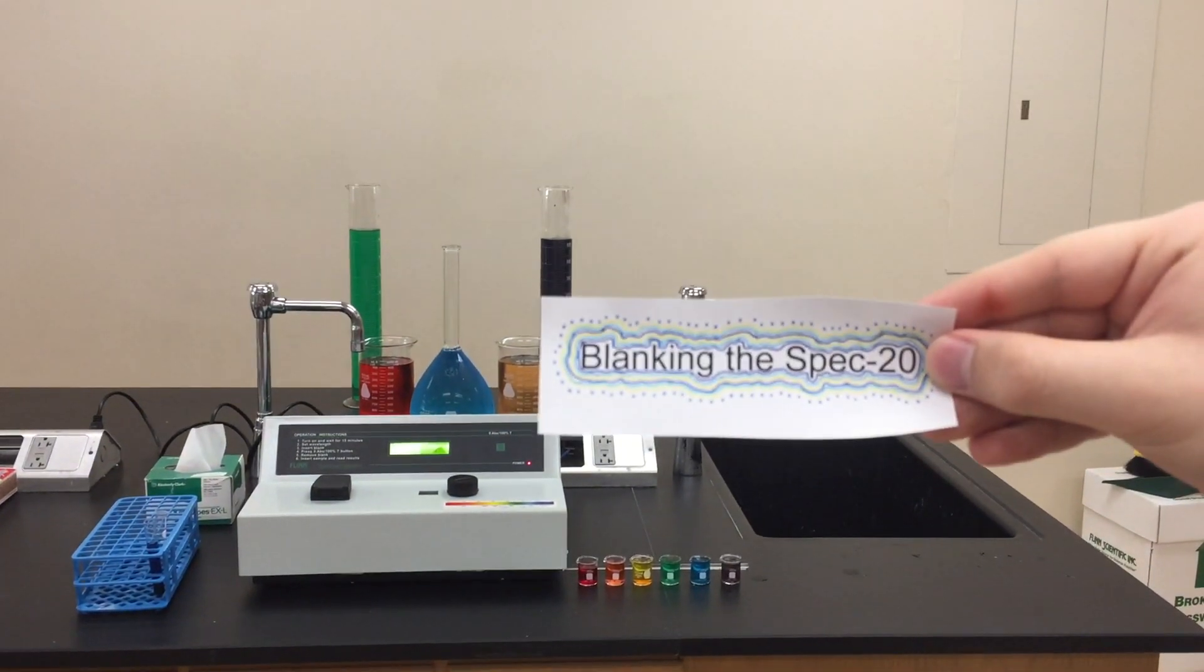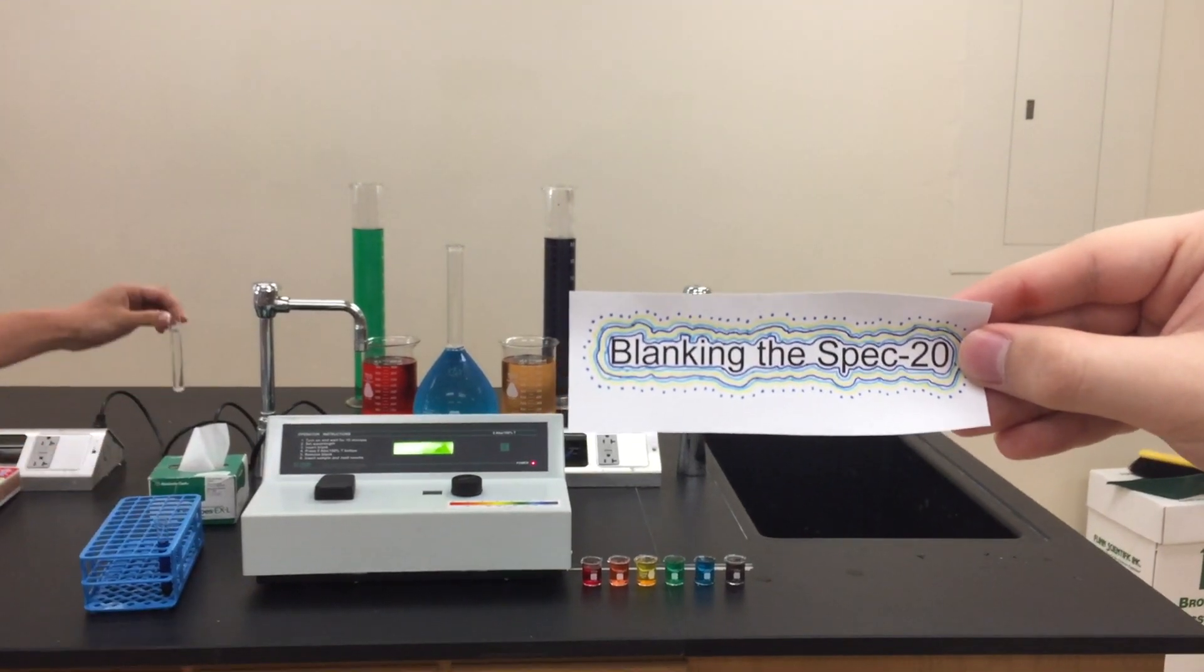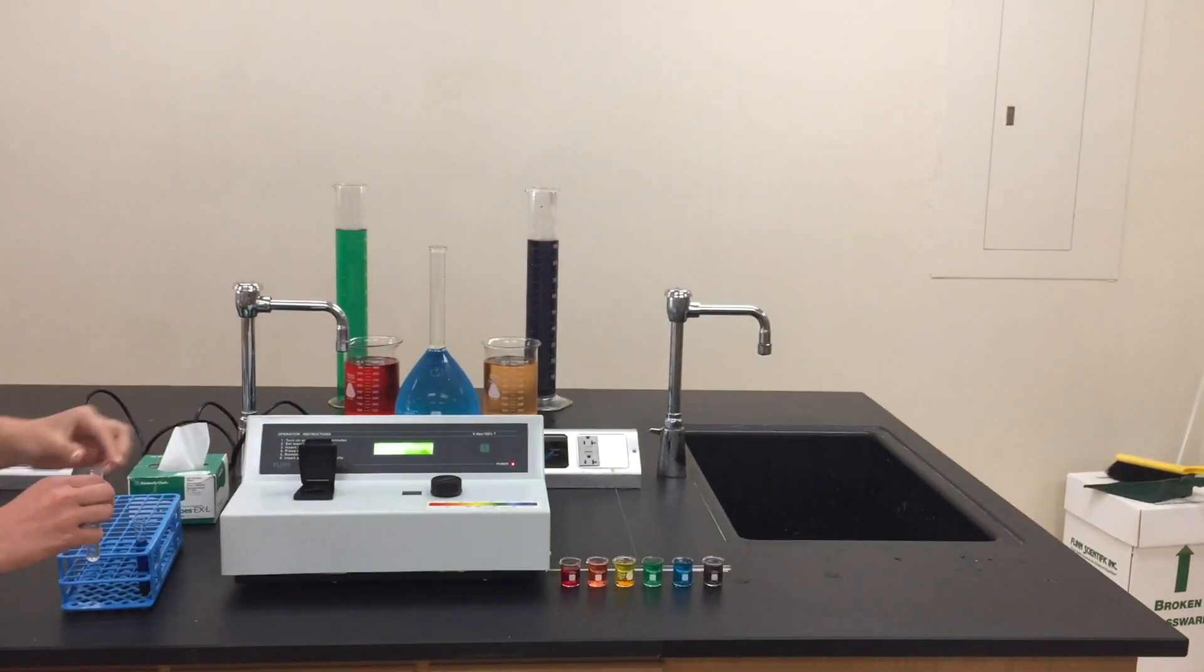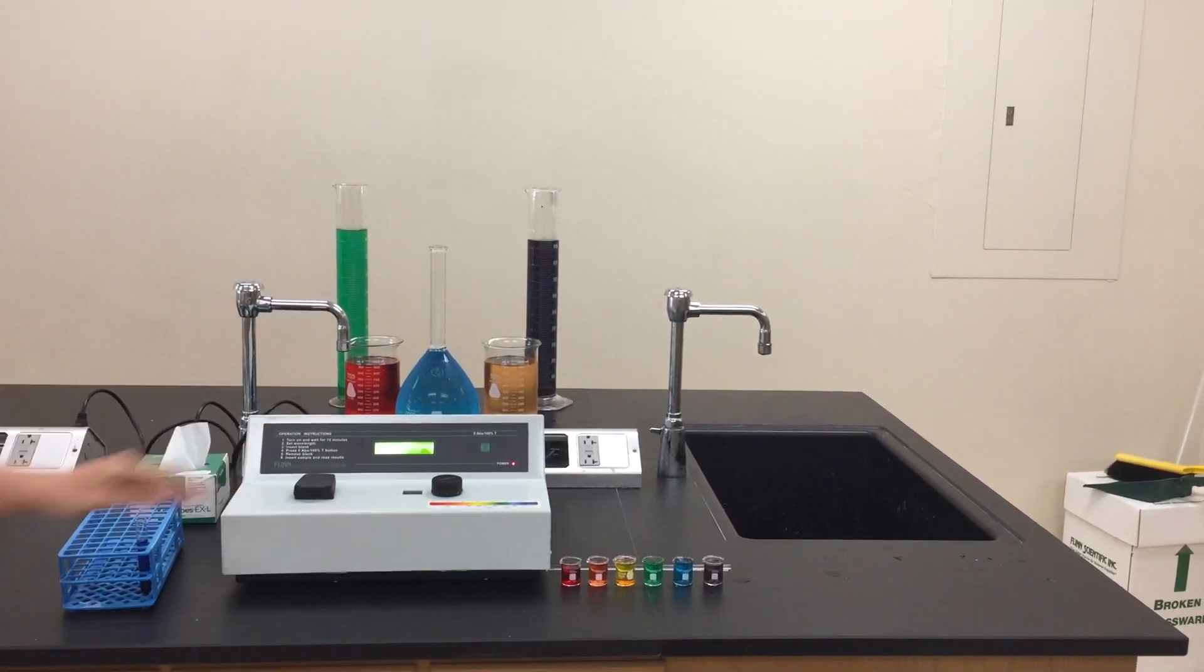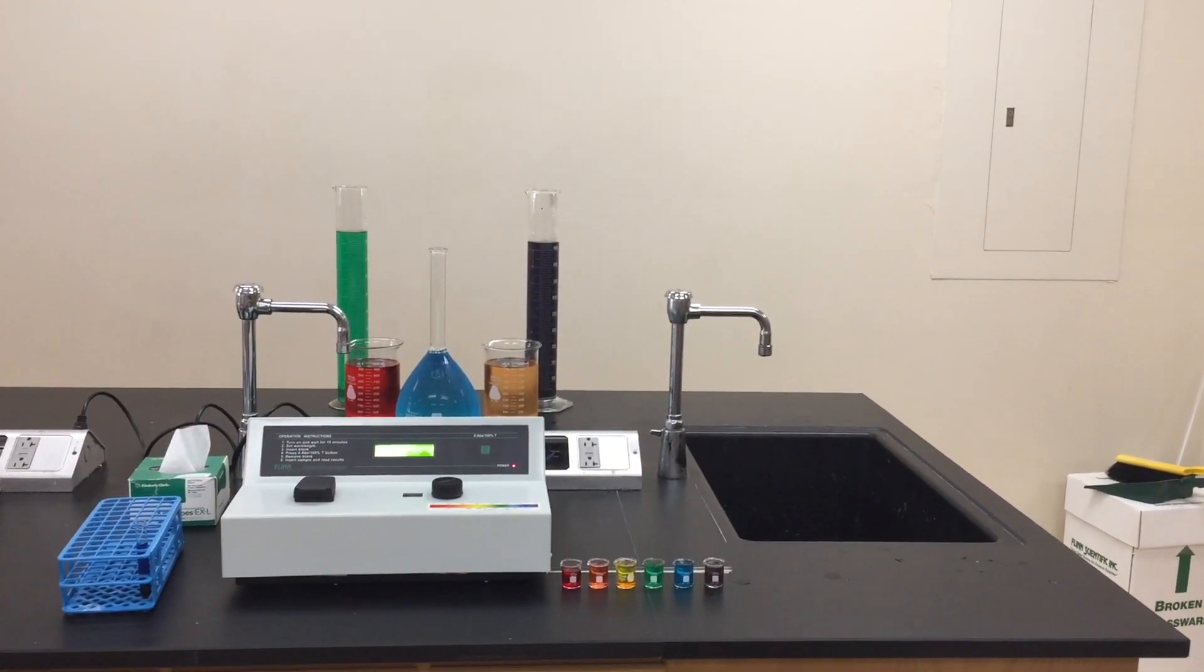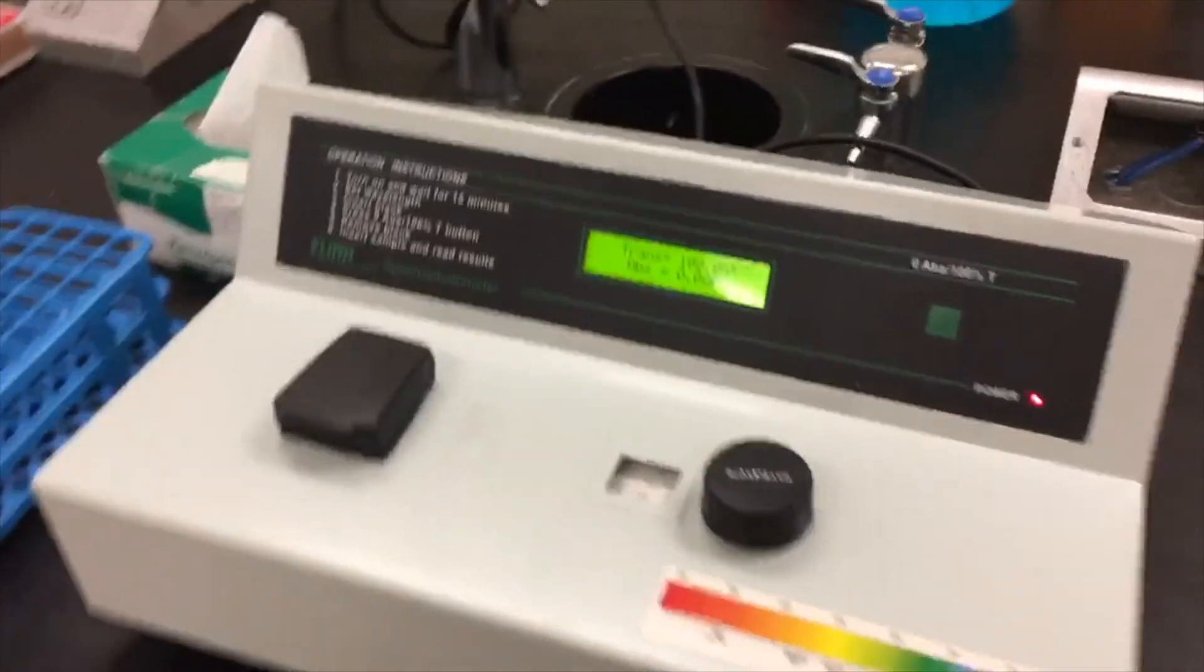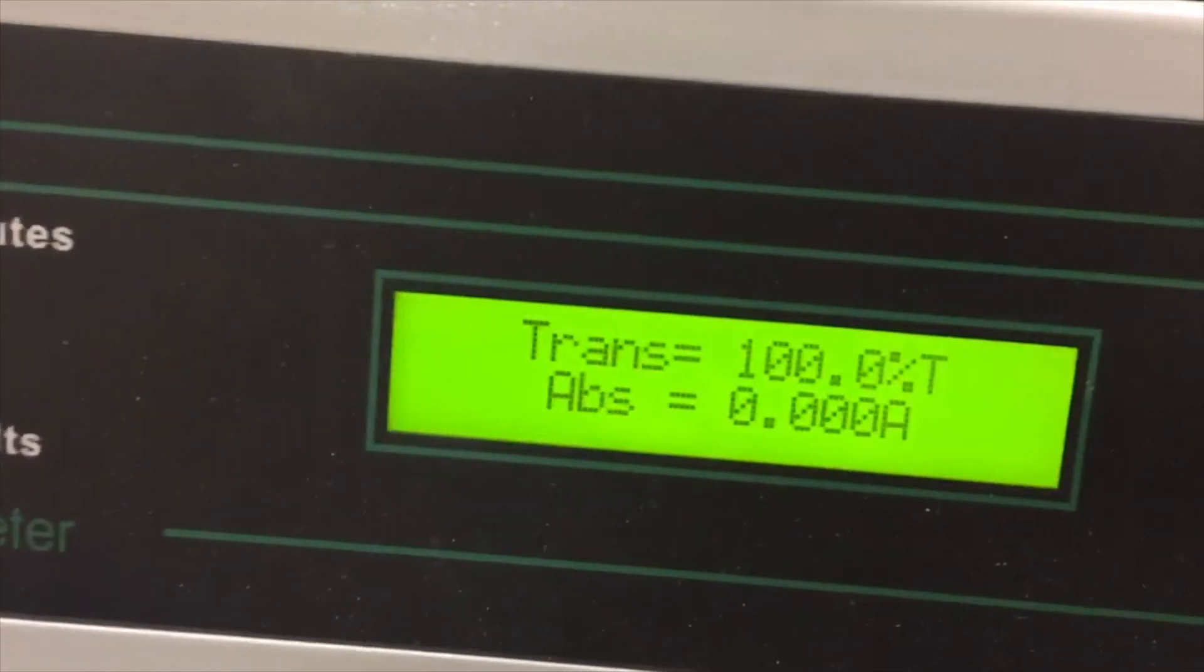To blank the Spec 20, fill the cuvette about three-quarters full of water and place it in the sample holder. Then use the calibration button to set the absorbance to zero. You will need to do this before every new solution.